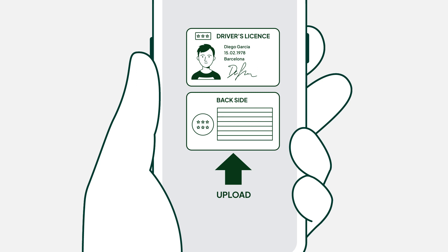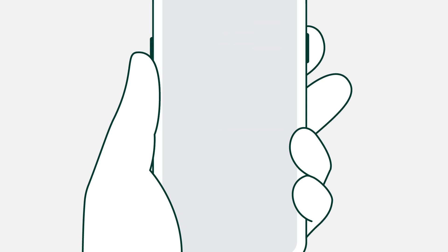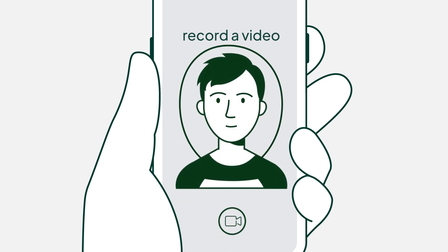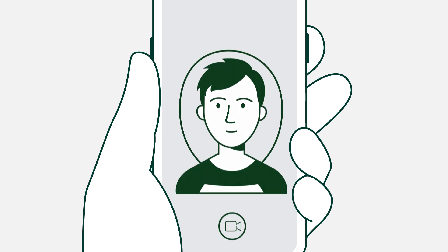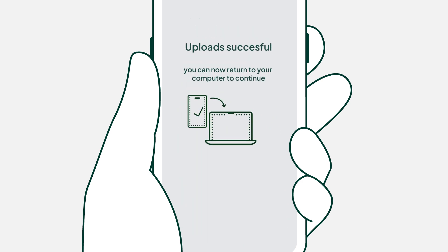Once you've got good enough photos, click upload to continue. Next is face verification. You'll need to use your smartphone — you can either type in the link provided or have it sent straight to your phone. You'll be asked to complete two simple actions while filming yourself. Simply follow the on-screen instructions and you'll be done in no time. Once you've got a good enough video, click upload and wait for confirmation. Once your video has uploaded, you can continue the verification process on your computer.